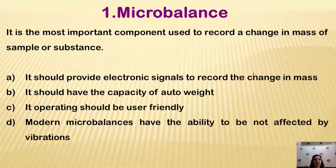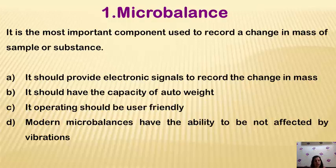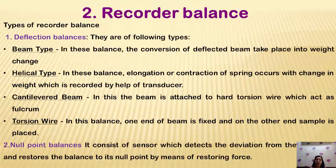The micro-balance is the most important unit of thermo-gravimetric analysis. You are taking a definite amount of sample and recording the change in mass. It provides an electronic signal with change in mass. It should have a capacity for auto-weight and should operate eco-friendly. Modern micro-balances are not affected by vibrations. The recorder balance records and shows the change in weight with respect to deflection. There are two types: deflection balance and null point balance.